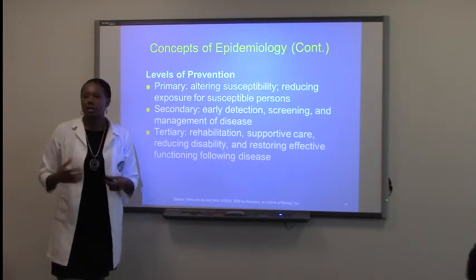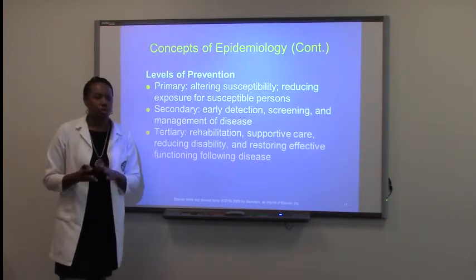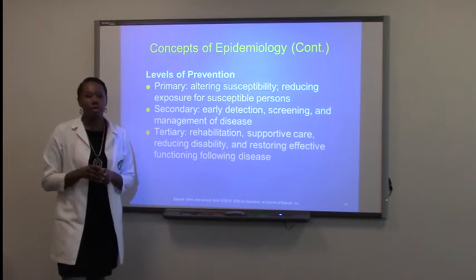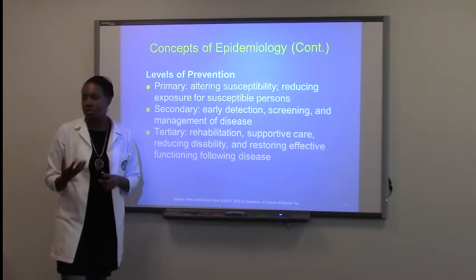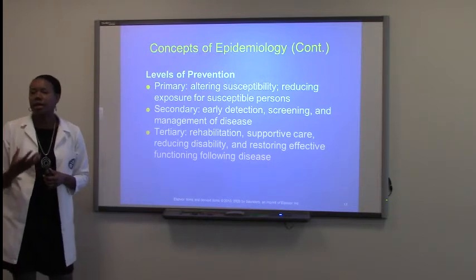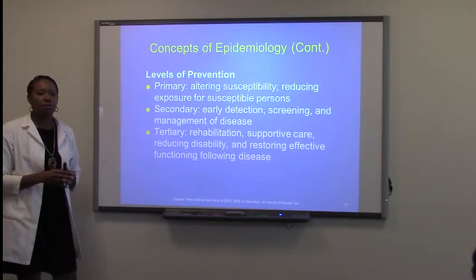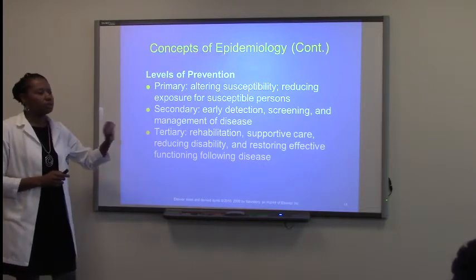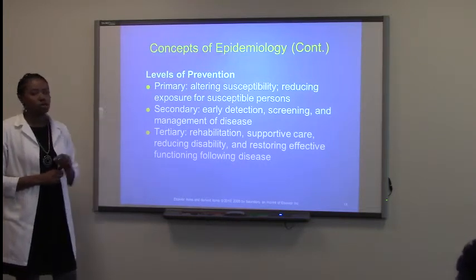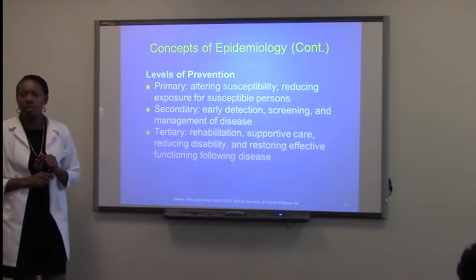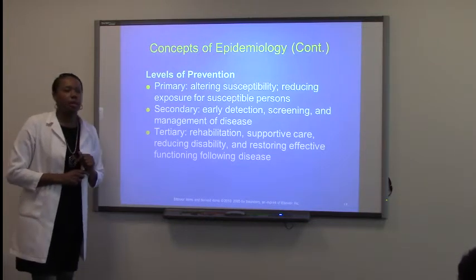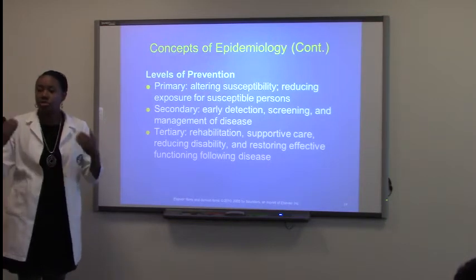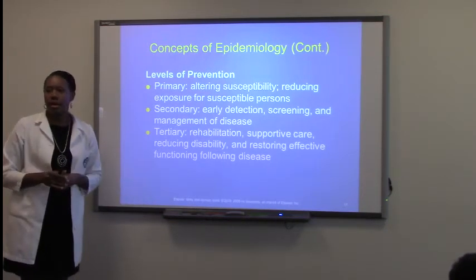You will be sitting down talking to your patients — this is what you should adjust, this is what you should do. Doctors don't have time to do all that. You will really get to know your patients, instruct them, and get them on the right track. So, levels of prevention: primary is altering susceptibility — making sure that patients are not susceptible to contracting a disease or spreading it to someone else.